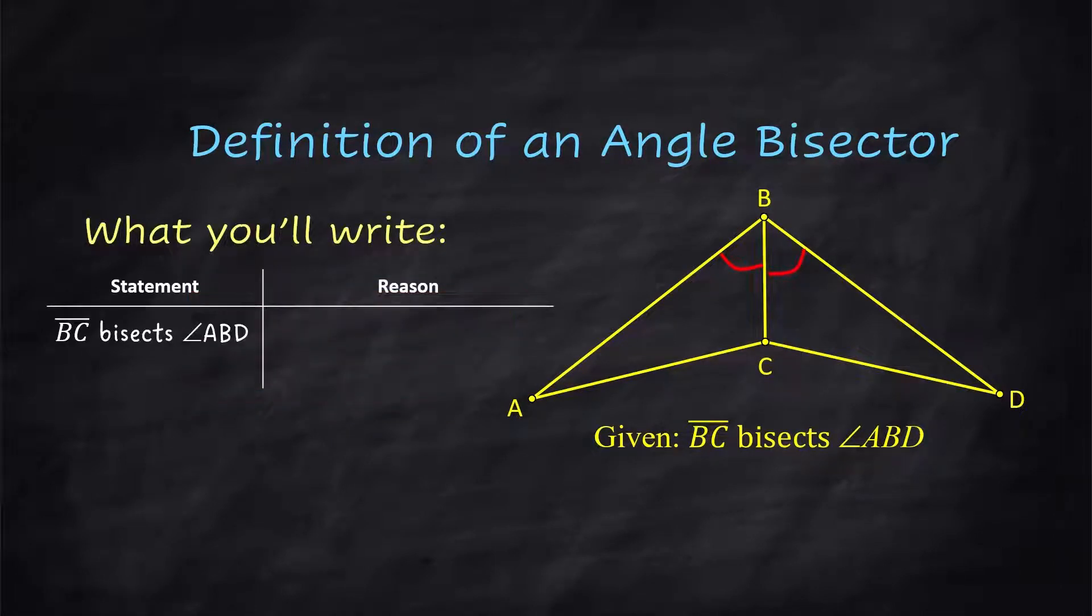In your proof, you have to start out with your given information. So BC bisects angle ABD. Then you can state that angle ABC right here is congruent to angle CBD right here. And that's the definition of an angle bisector.